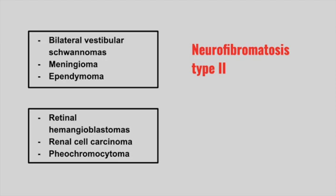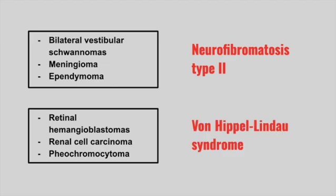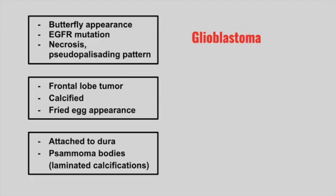Next is a patient with hemangioblastomas, renal cell carcinoma, and pheochromocytoma. This is von Hippel-Lindau disease. Next is a patient with a tumor that appears like a butterfly. It has the EGFR mutation and on biopsy it appears necrotic with pseudopalisading. This is a glioblastoma.